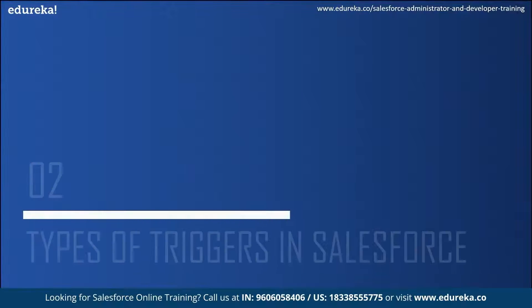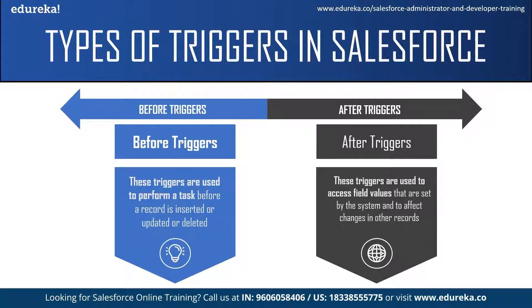There are two types of triggers in Salesforce: before triggers and after triggers. Before triggers are used to perform a task before a record is inserted, updated, or deleted, and are usually used to update or validate record values before they are saved to the database. After triggers are used to access field values already set by the system, such as a record's ID, date, or phone number field, and to affect changes in other records. After triggers are read-only — you cannot make any changes to them.